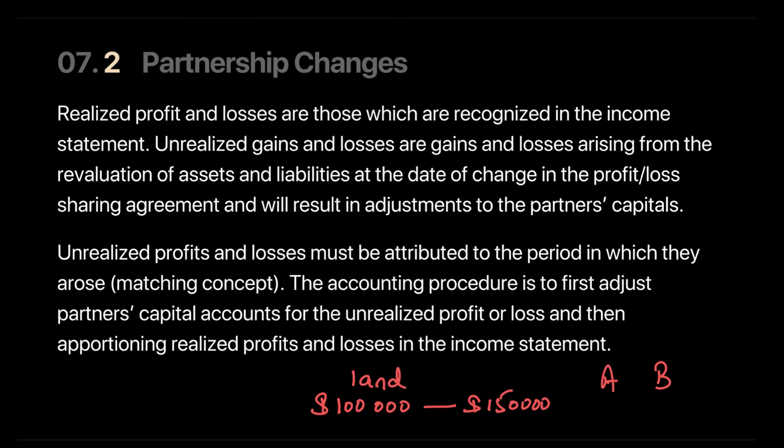This gain on the value of land, which rose from $100,000 to $150,000, is an unrealized gain of $50,000. This unrealized gain of $50,000 belongs to partners A and B, because they invested their money and they should get this gain — not the new partner coming in.